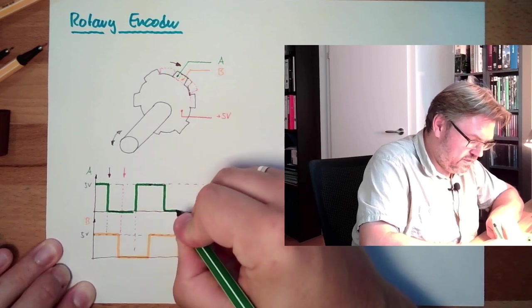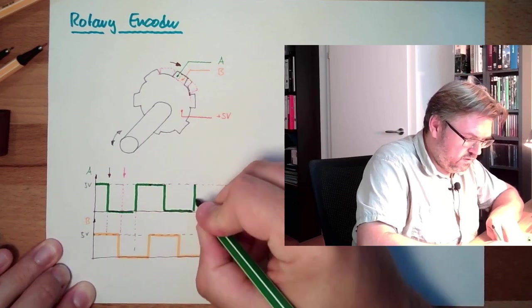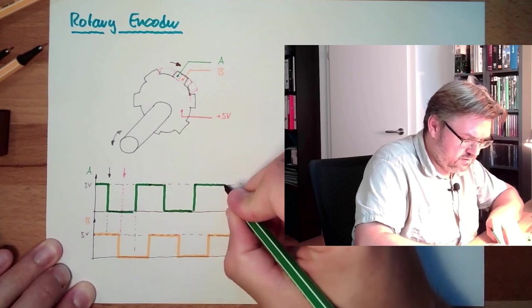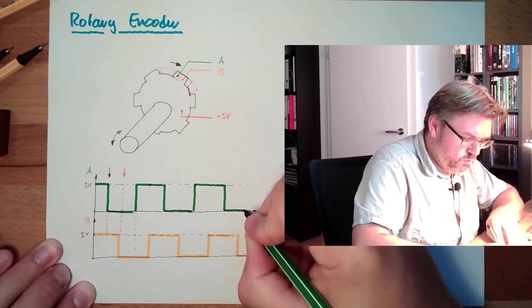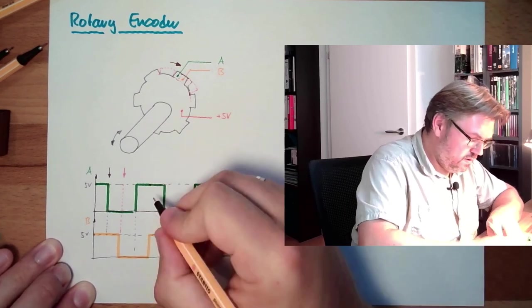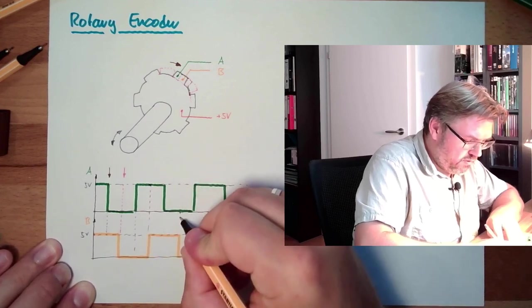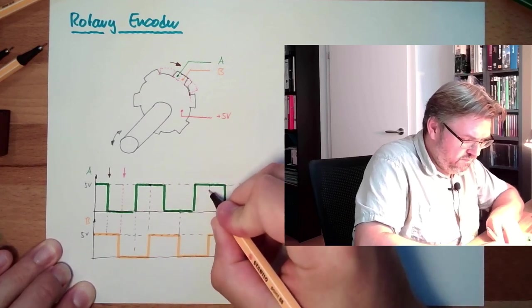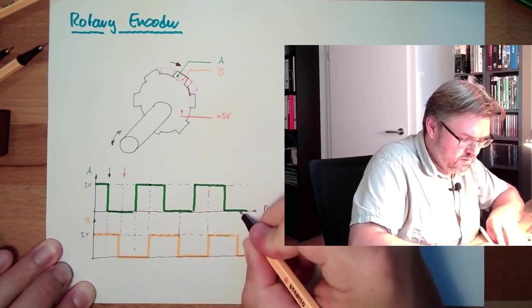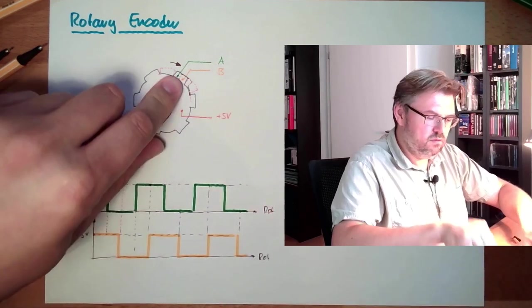We have an offset of the two changes which are appearing. Always an offset here. Which are appearing because of the mechanical offset here.